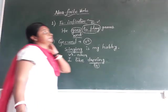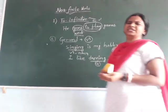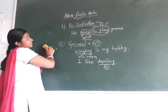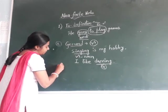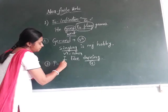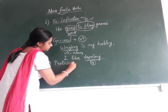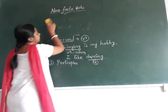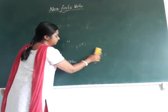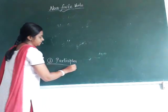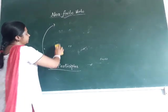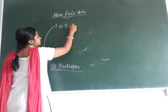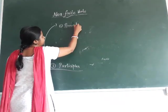Now we will go to the third point, which is very very important. The third one is participles. We have different types of participles. There are three types of participles. The first one is the present participle.